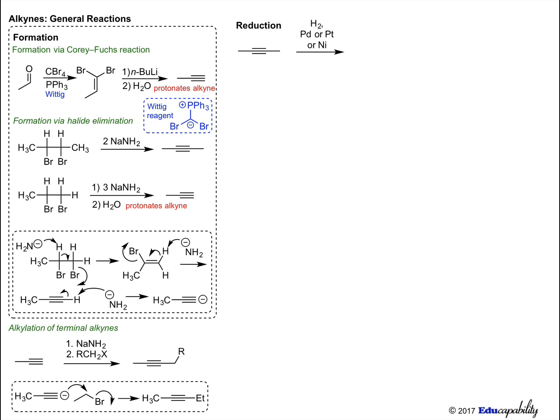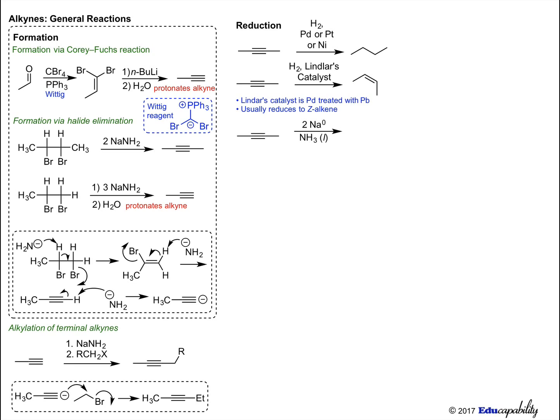Alkynes can be reduced completely by hydrogenation, forming alkanes. When a palladium catalyst treated with lead salts, called Lindlar's catalyst, is used in alkyne hydrogenation, the alkyne may be reduced to the Z-alkene. The E-alkene can be formed by treating the alkyne with sodium and liquid ammonia. This is a radical reaction.